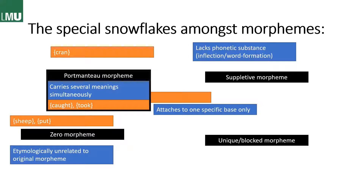But in this case, you have things like 'caught' and 'took,' which are both either past participles or simple past forms, and would normally require -ed to mark them. But they are just implicitly marked for the past by their form — so they have both the form and the lexical content within the same morpheme, which makes them portmanteau morphemes.